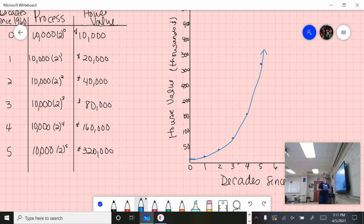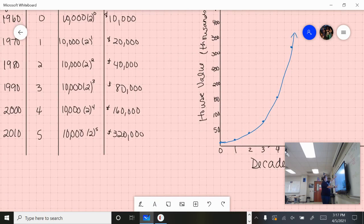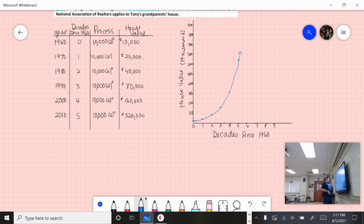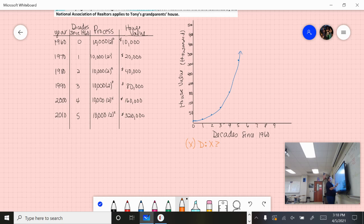There are a couple of bits of information we can get from this. We can look at our domain and range. We can use the table or the graph to make predictions about values. We can also use the table to actually figure out an equation. Domain, remember, is your x values. In this case, we start at zero, but we have no indication that the house stops losing value, so x is greater than or equal to zero.